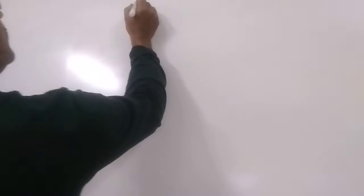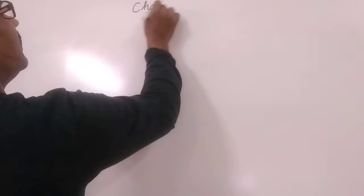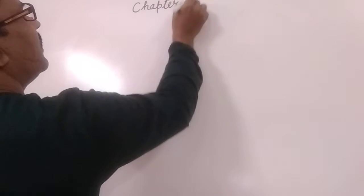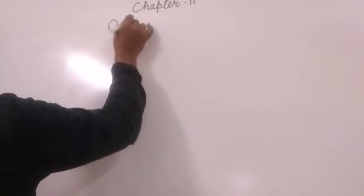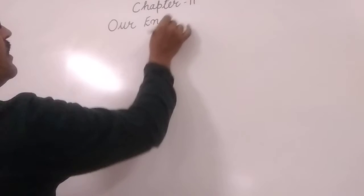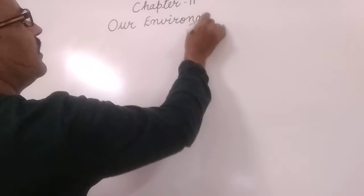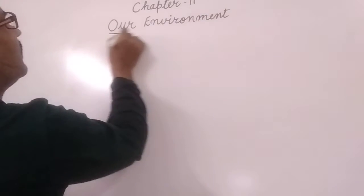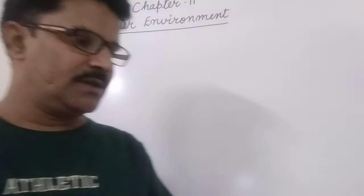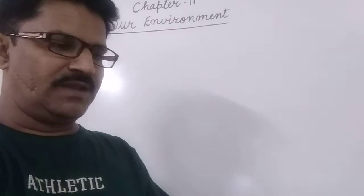Good morning everyone. Today we will discuss chapter 11, that is our environment. In our environment, every animal has special features. Different animals are found in different habitats like water, air, land, etc. Each organism adapts to its environment with special features.